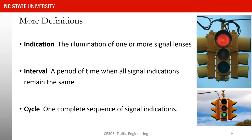I have more definitions to share. We have indication — at a signalized intersection we can have a green indication, a yellow indication, and a red indication. An interval is a period of time when all signal indications remain the same with no change at the intersection. A cycle is one complete sequence of signal indications.